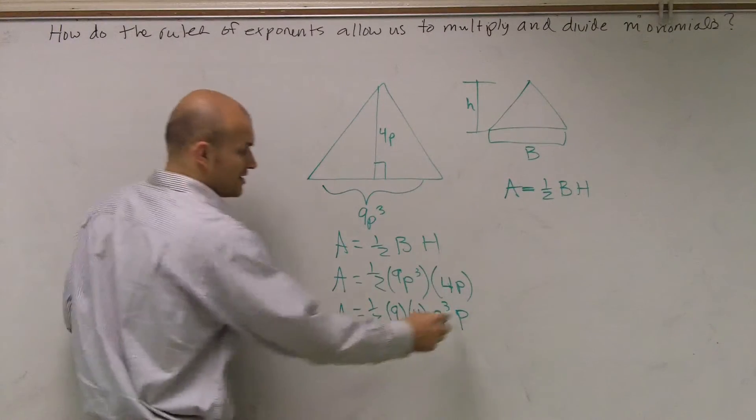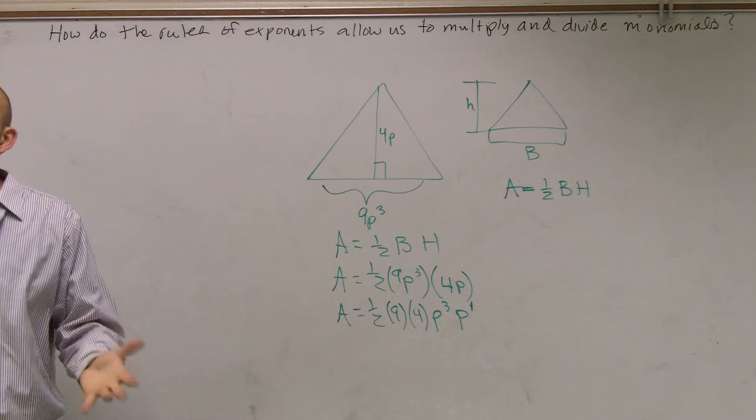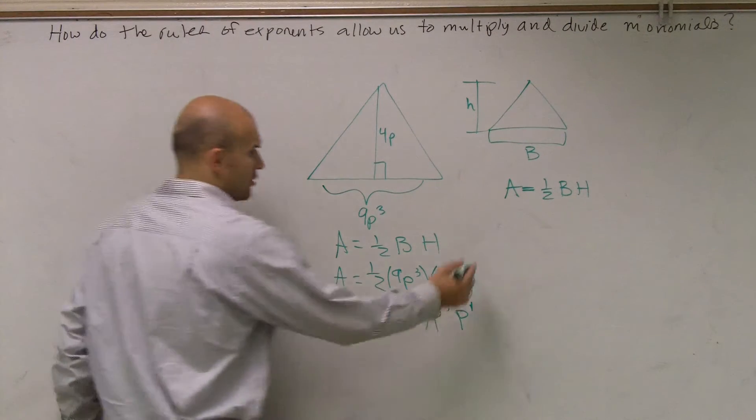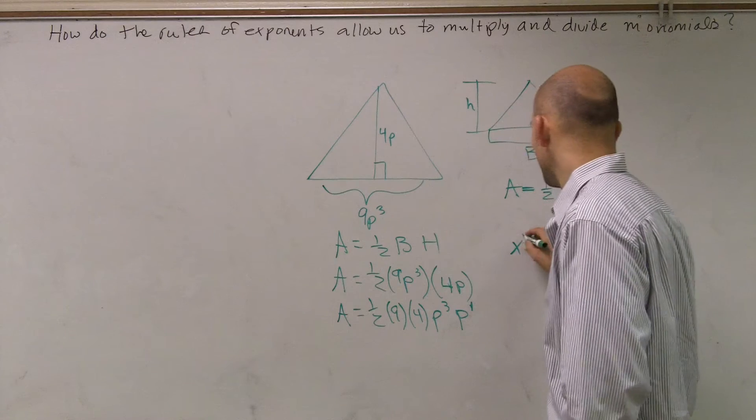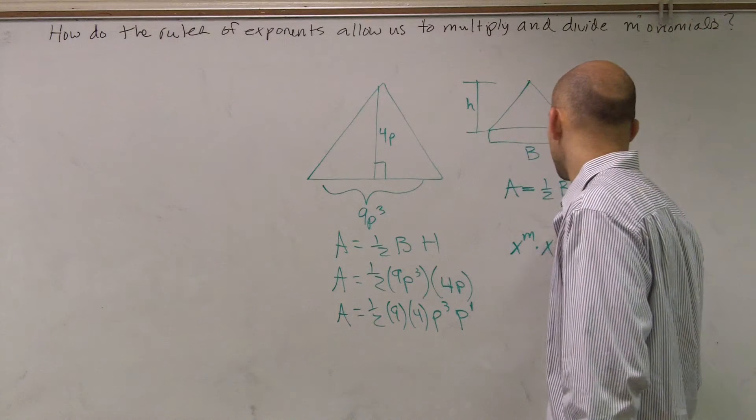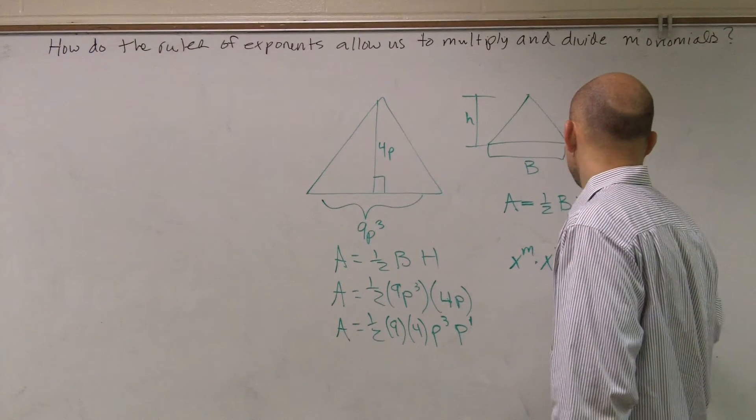And remember, when there's no exponent, we can put a 1 up there. So remember our rule of exponents, our multiplication rule of exponents. When you have two exponents that you're multiplying, you can add the exponents.